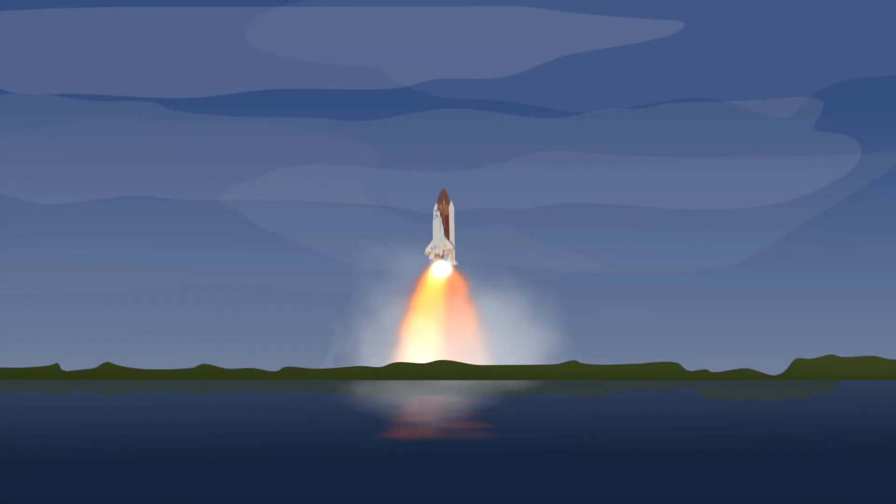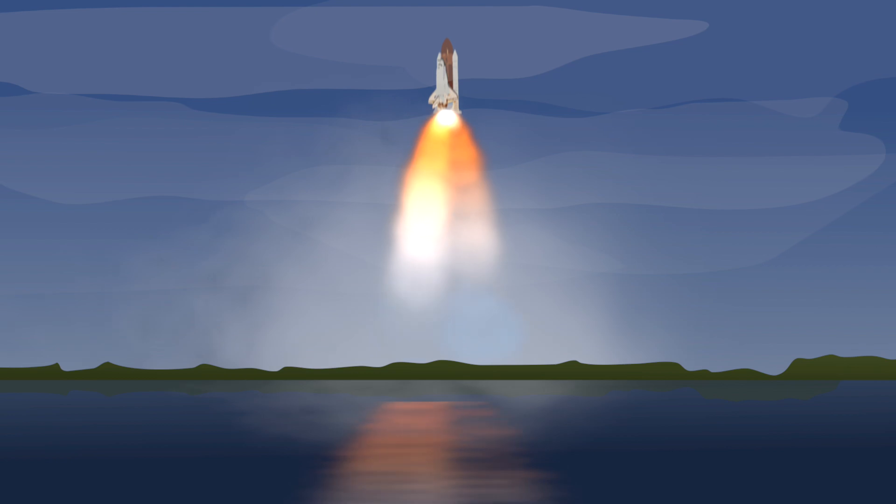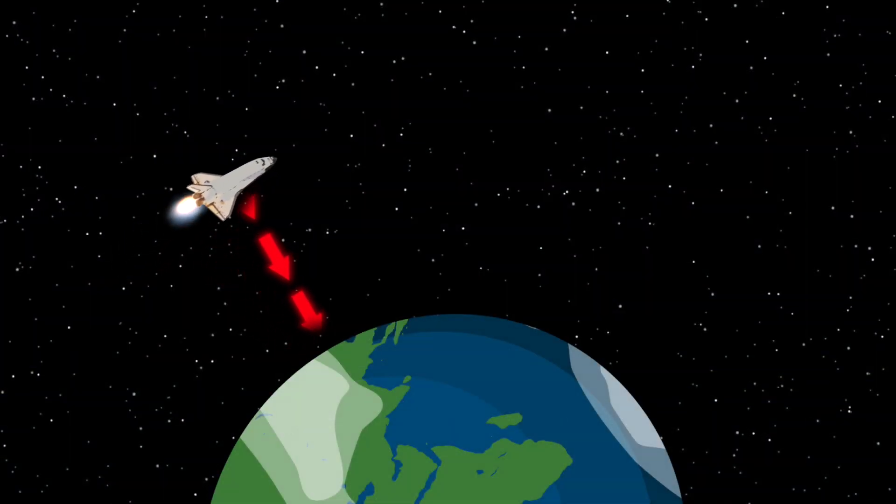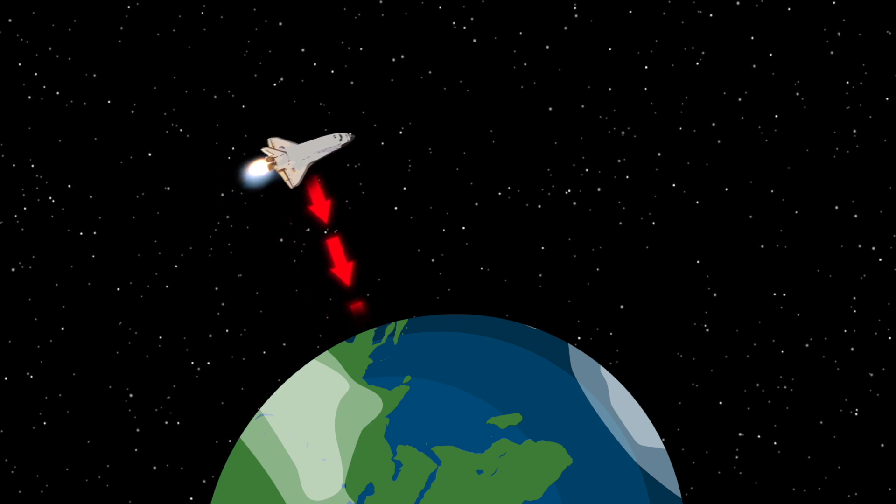This is exactly what happens when a rocket is launched into space. The rocket accelerates to a speed and distance where even with gravity constantly pulling on it, the rocket can't fall back to Earth because it's just going too fast.